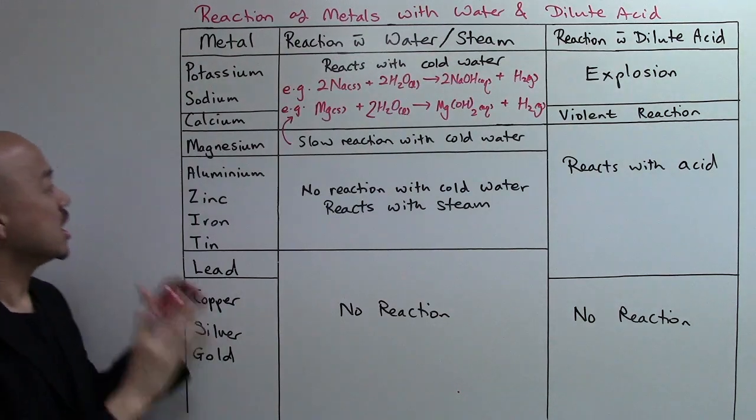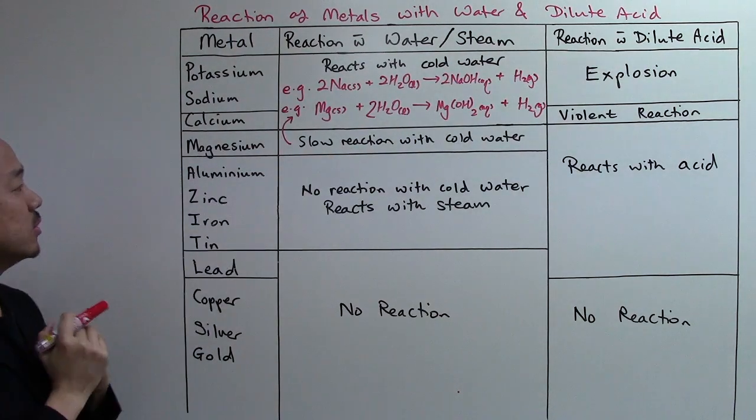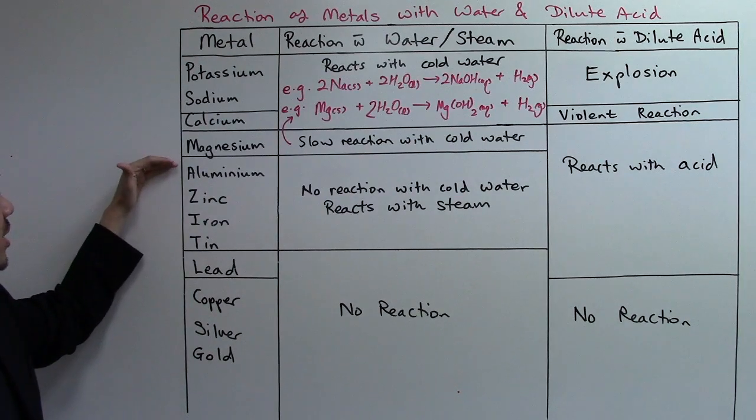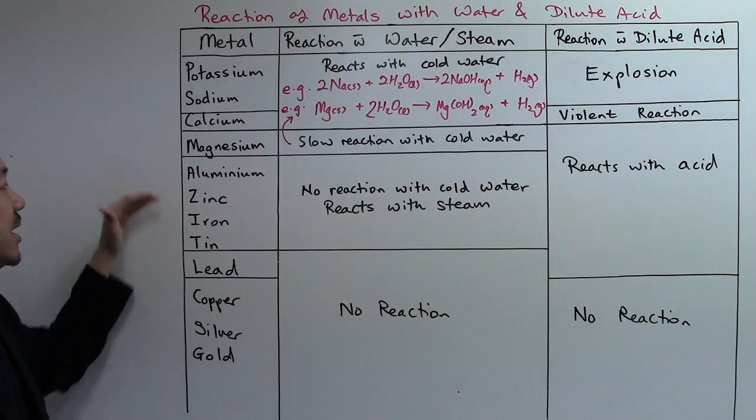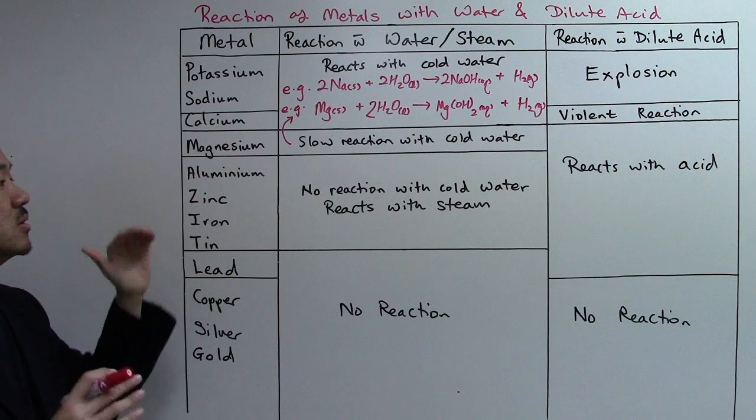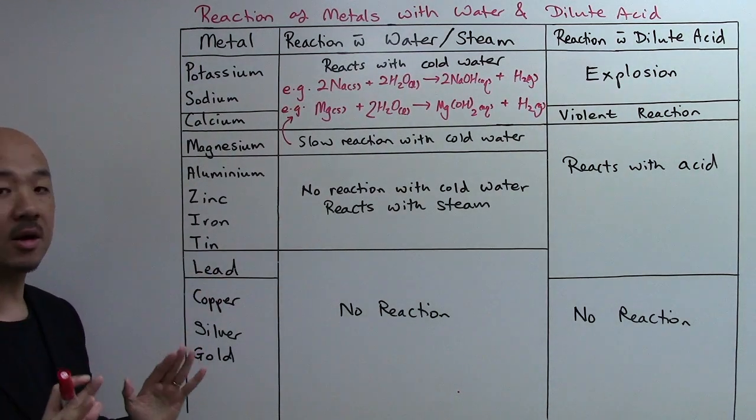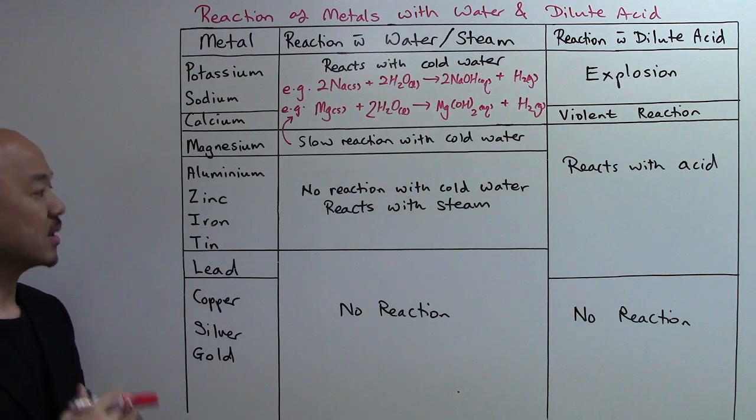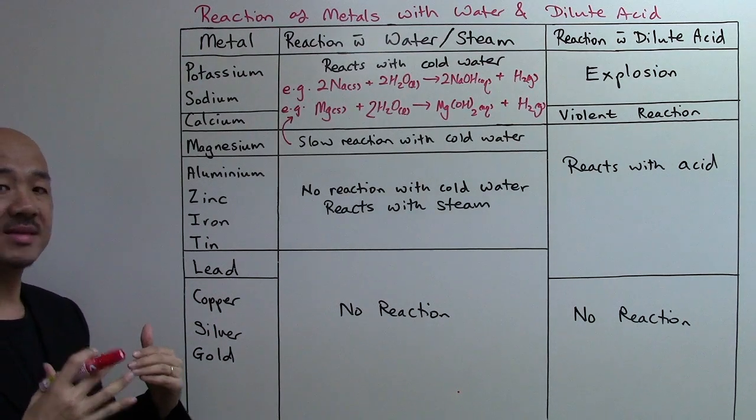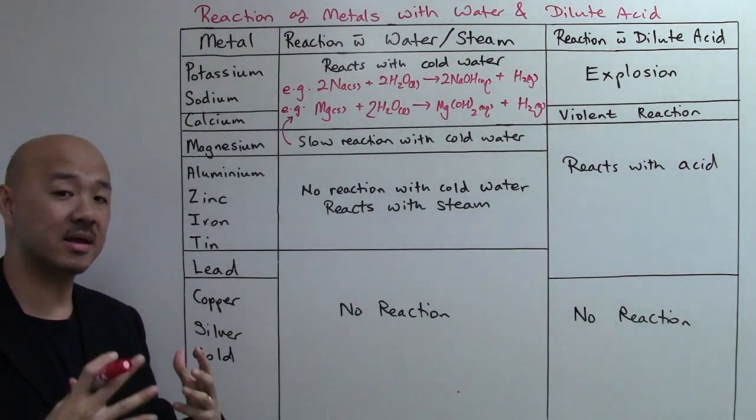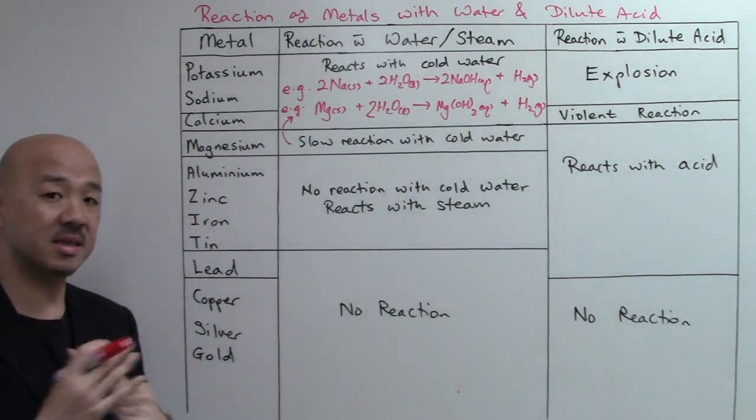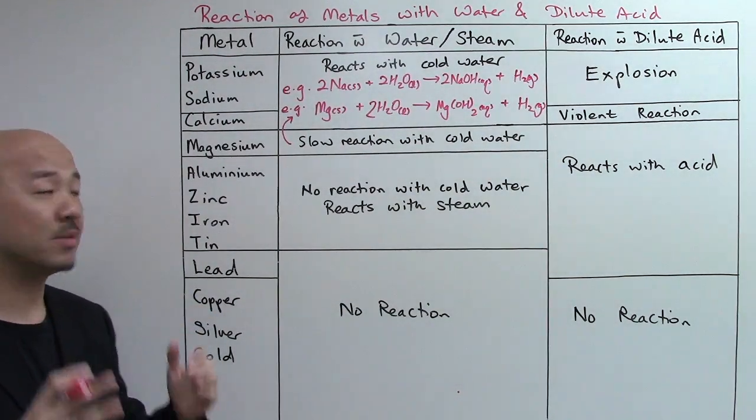From aluminum to tin, these four metals will not react with cold water - there's no reaction at all. Instead they will react with steam. If the metal is heated up and steam passed through it, it will react, and when they react they will still form hydrogen gas but instead of alkaline solution they form your metal oxide.